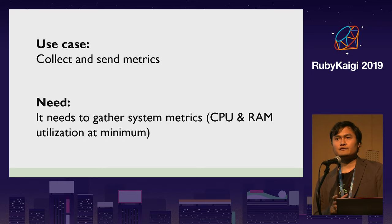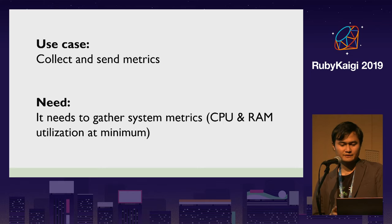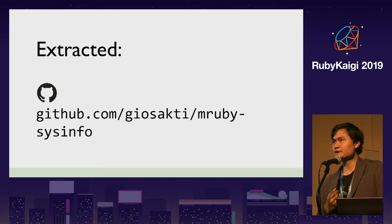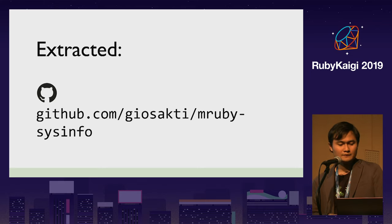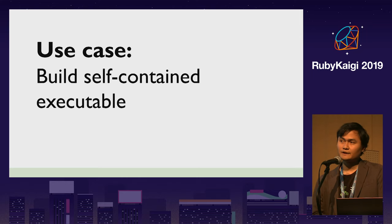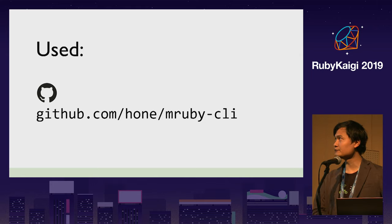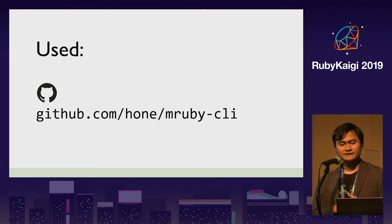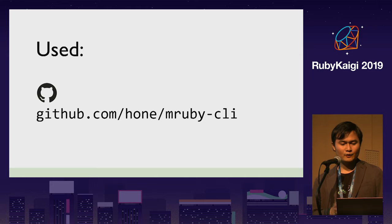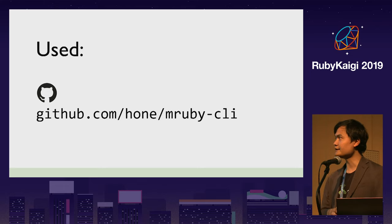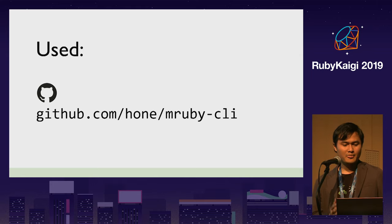For collecting and sending metrics — gathering system metrics in Linux — there are existing tools to gather this information. For now we only gather CPU and RAM, so we created a small library to handle that. For creating a self-contained executable, I found a library that's very useful. In mruby you can create a simple C wrapper to produce an executable, which makes it very straightforward. This is something I really like about mruby — in standard Ruby there's no straightforward way to create a distributable self-contained executable, but in mruby it's very easy.